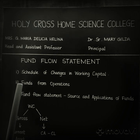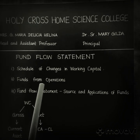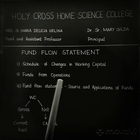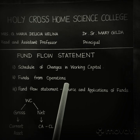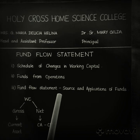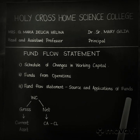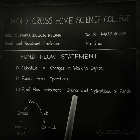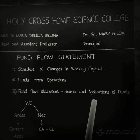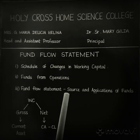The second step is funds from operation, which is the major source of funds to an organization — only the funds generated from business operations are recorded here. The third step is the fund flow statement itself, which describes the sources and application of funds. You record the additional funds derived and the uses of funds where all these funds are applied.